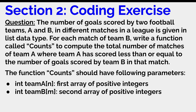Section two was a coding exercise. I could use any language, but it was mentioned on the HackerRank platform that Python was preferred. The question: the number of goals scored by two football teams A and B in different matches is given as lists. For each match of team B, write a function called counts to compute the total number of matches of team A where team A scored less than or equal to the goals scored by team B in that match.